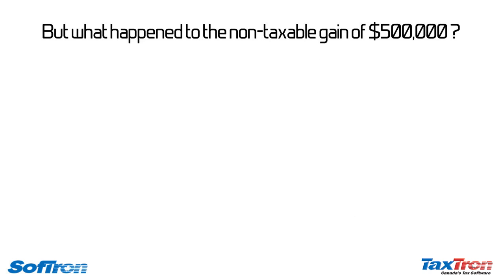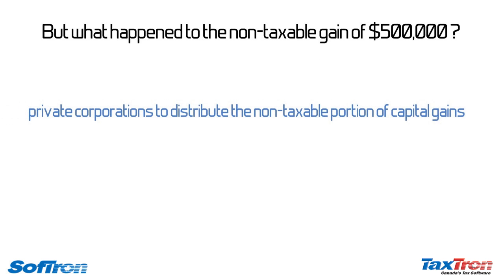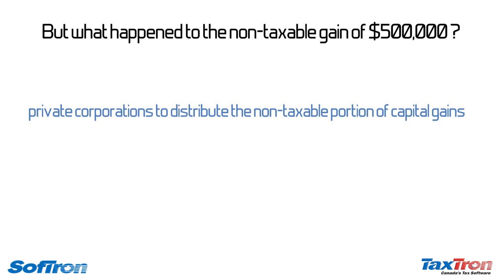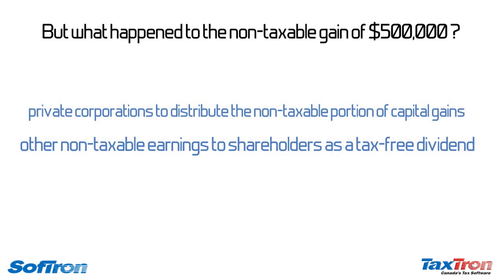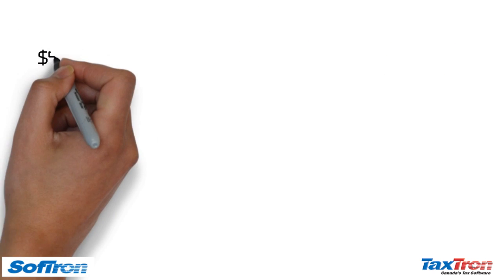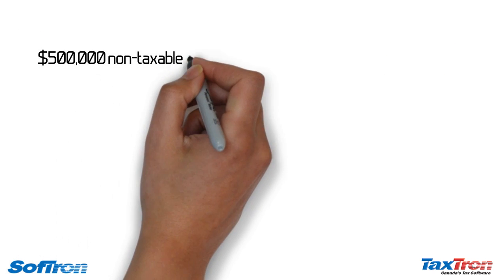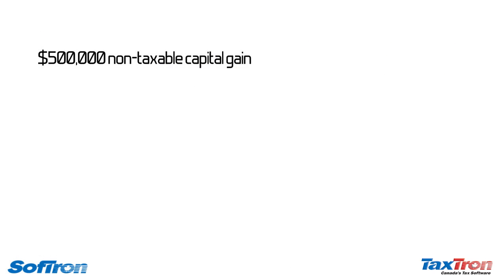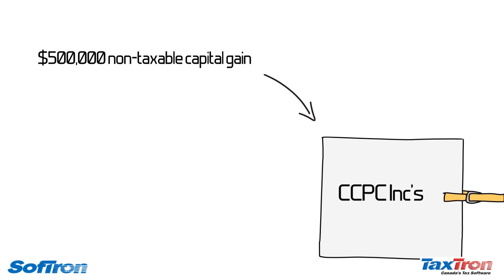But what happened to the non-taxable gain of $500,000? This is where the Capital Dividend Account comes in, as it allows private corporations to distribute the non-taxable portion of capital gains and other non-taxable earnings to shareholders as a tax-free dividend. The $500,000 non-taxable capital gain will flow to CCPC, Inc.'s Capital Dividend Account.